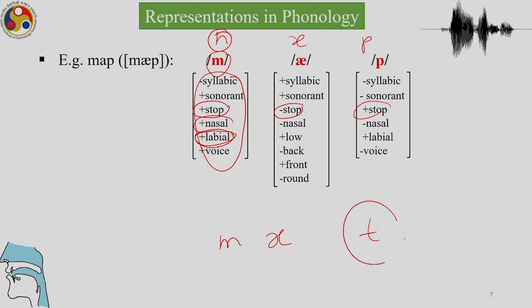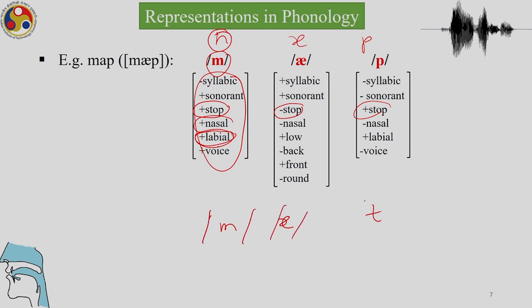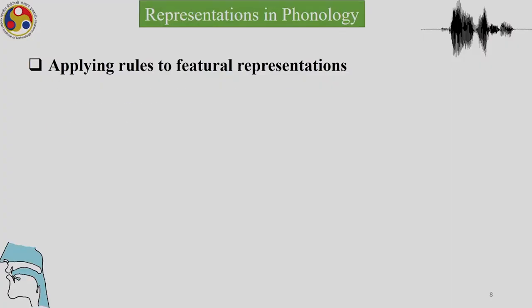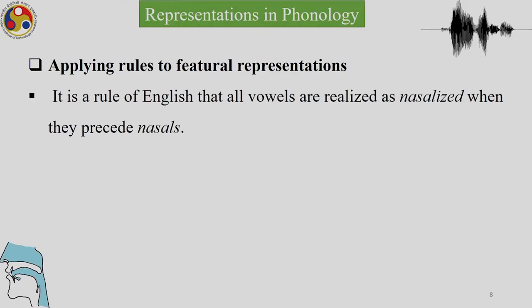Similarly, if the word changes from 'map' to 'mat,' what changes is the final consonant. The /p/ features — minus syllabic, minus sonorant, stop, minus nasal, minus voice — remain the same, but the labial category changes as /t/ is alveolar. It is a rule of English that all vowels are realized as nasalized when they precede nasals and appear as oral in all other contexts, for example 'cam' versus 'cab.'